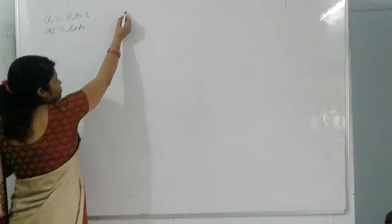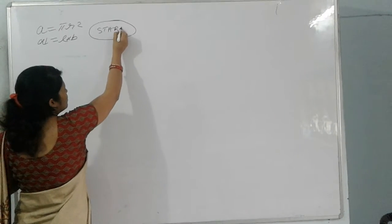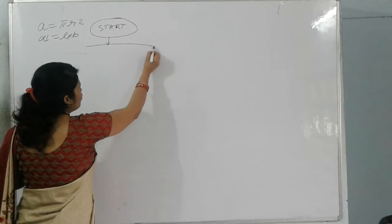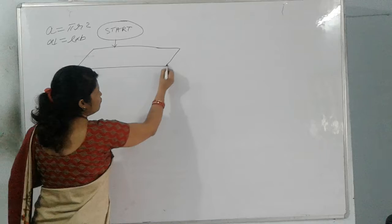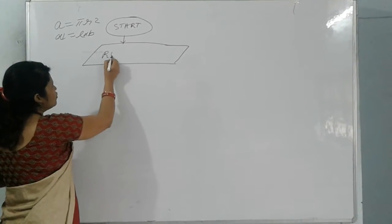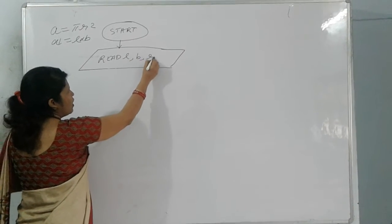So first we will start the flowchart starting with the start box. Then we are going to read the value of the variables which are required in the formula. So we need length, breadth and radius. So we are going to write read l, b, r.